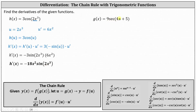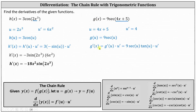Next, we have g of x equals 9 secant of the quantity 4x plus 5. Whether we use the derivative formula for secant u below or recognize the inner function as 4x plus 5, we begin with u equals 4x plus 5. u prime equals 4. We can now write g as a function of u as g of u equals 9 secant u. Applying the chain rule to find g prime of x, we have g prime of x equals g prime of u times u prime, where g prime of u is equal to 9 secant u tangent u, and then times u prime.